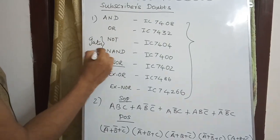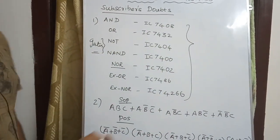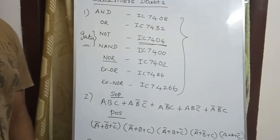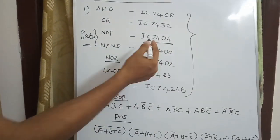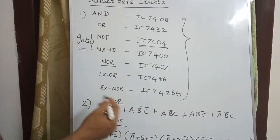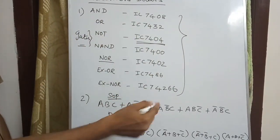In the previous video, we had a mistake regarding the NOT gate IC number. This is the complete strategy for IC numbers.